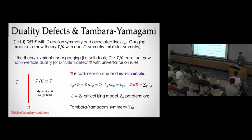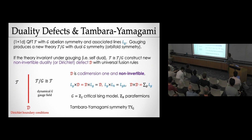Let's give more details on the fusion rules in some examples. In 1+1D QFT, consider a theory T with some abelian ordinary symmetry G. This abelian ordinary symmetry is associated with some topological lines in our 1+1D theory. If they act on space, they're operators; if we extend them in time, they make twisted sectors. Those are the ordinary G charges.